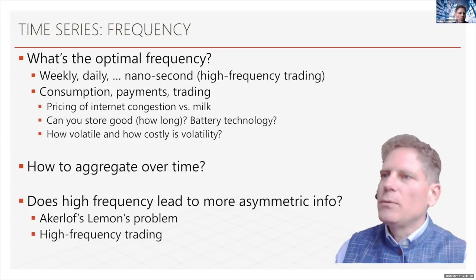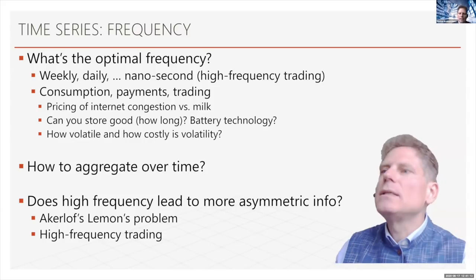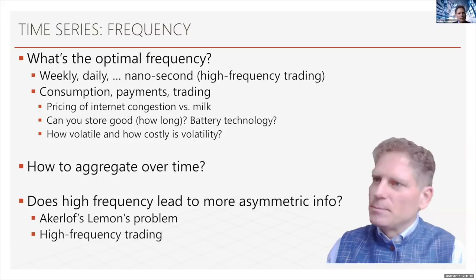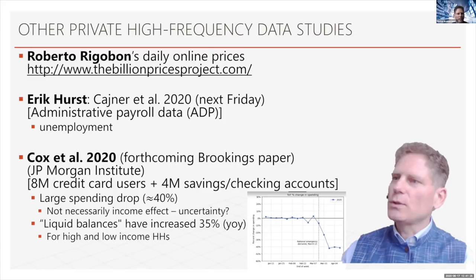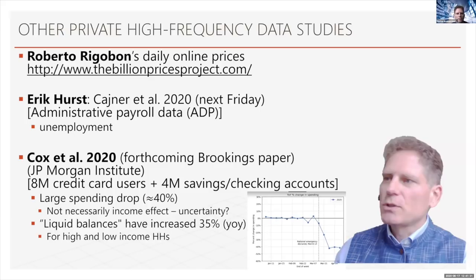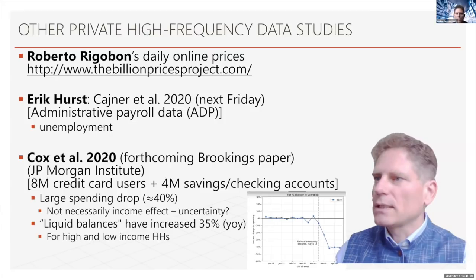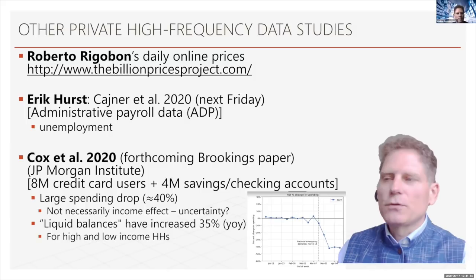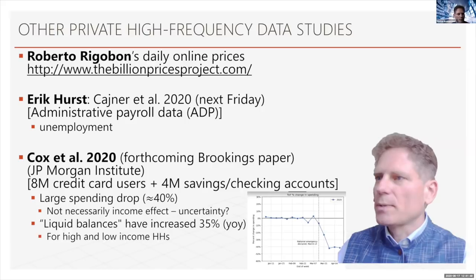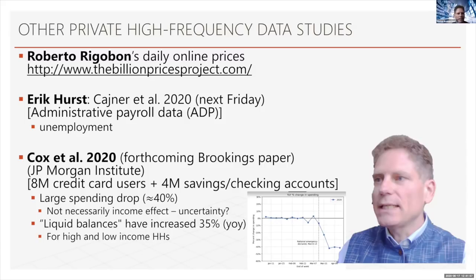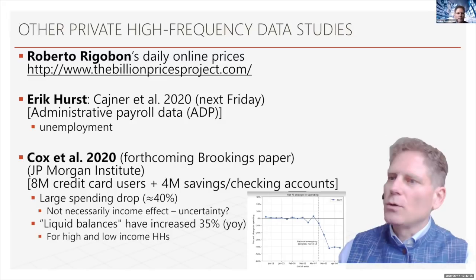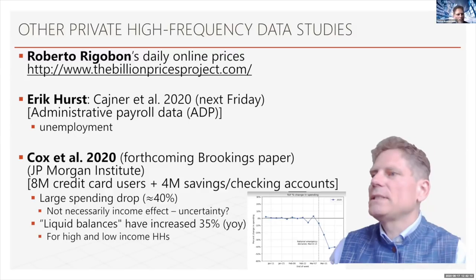There's no way around it — we have to look at more high-frequency data, though it comes with new economic challenges. In the existing literature, one example is Roberto Rigobon's daily online prices — the Billion Price Project started in 2008 — which scrapes online prices from across the world to get reliable predictions of inflation data. Eric Hurst will present next Friday, looking at administrative payroll data to get a good picture of unemployment and job openings at a much higher frequency than the official sector.